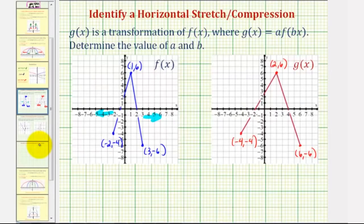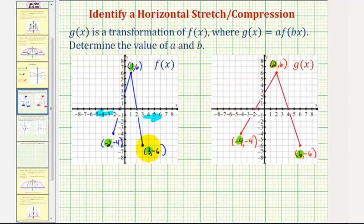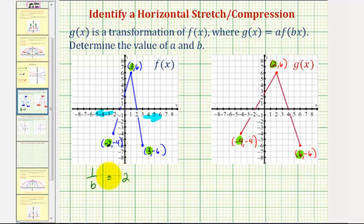Going back to our example, if we take a look at the corresponding x values, notice how negative 2 times 2 is equal to negative 4, 1 times 2 is equal to 2, and 3 times 2 is equal to 6. That does not mean b equals 2 — b is actually equal to the reciprocal of 2, or 1 half. So we could set up an equation as 1 divided by b equals 2 and solve for b, and it will be the reciprocal of 2, or 1 half.